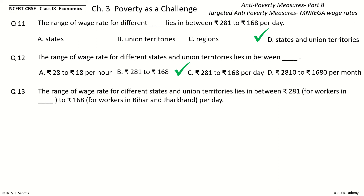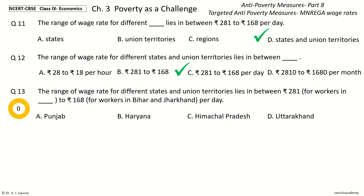Question 13: The range of wage rate for different states and union territories lies in between Rs. 281 to Rs. 168 per day — Rs. 281 for workers in which state? The options are: Punjab, Haryana, Himachal Pradesh, Uttarakhand. The answer is Haryana. The range is Rs. 281 for workers in Haryana to Rs. 168 for workers in Bihar and Jharkhand per day.